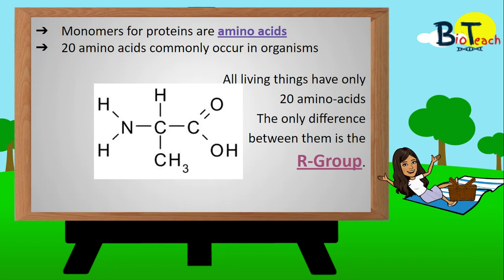In all living organisms there are 20 commonly occurring amino acids, and these can be linked in many different ways by bonds to form a huge variety of proteins. The first thing you need to know and be comfortable with is drawing the amino acid molecule.